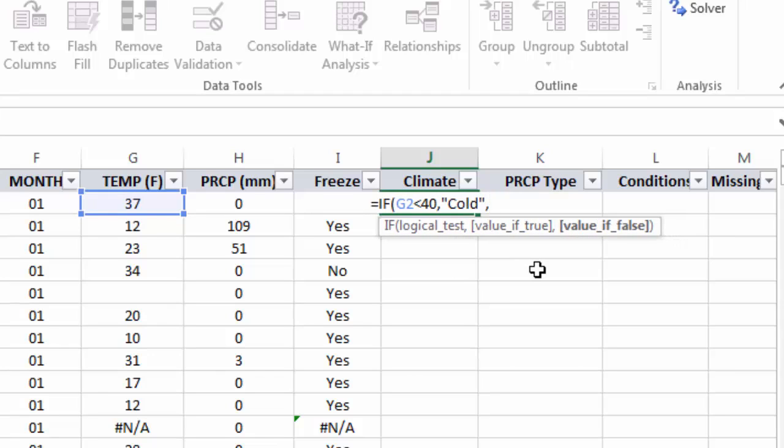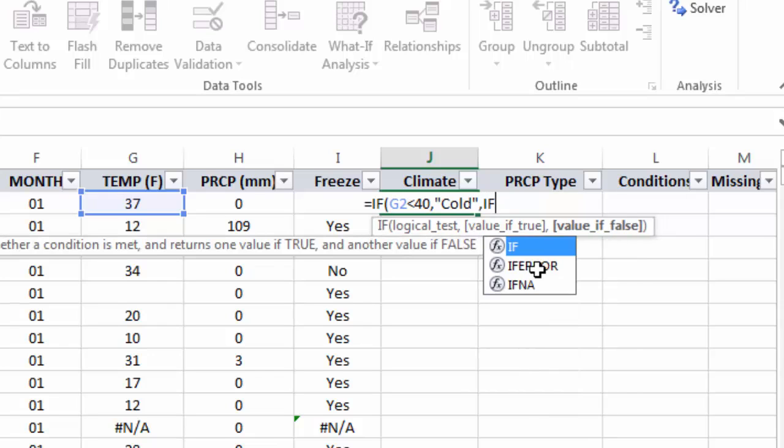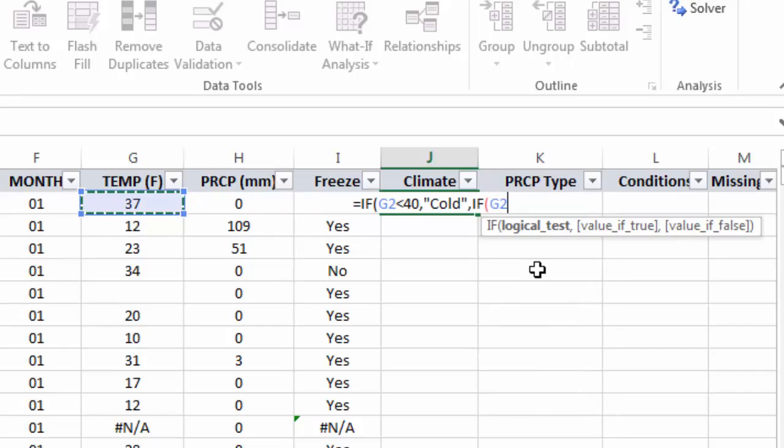Value of true is going to be cold. Now, value of false, rather than just saying hot or other here, I'm going to start another if statement. If the temperature is greater than 80, value of true, hot, in quotes, because it's a text string that I want to return.